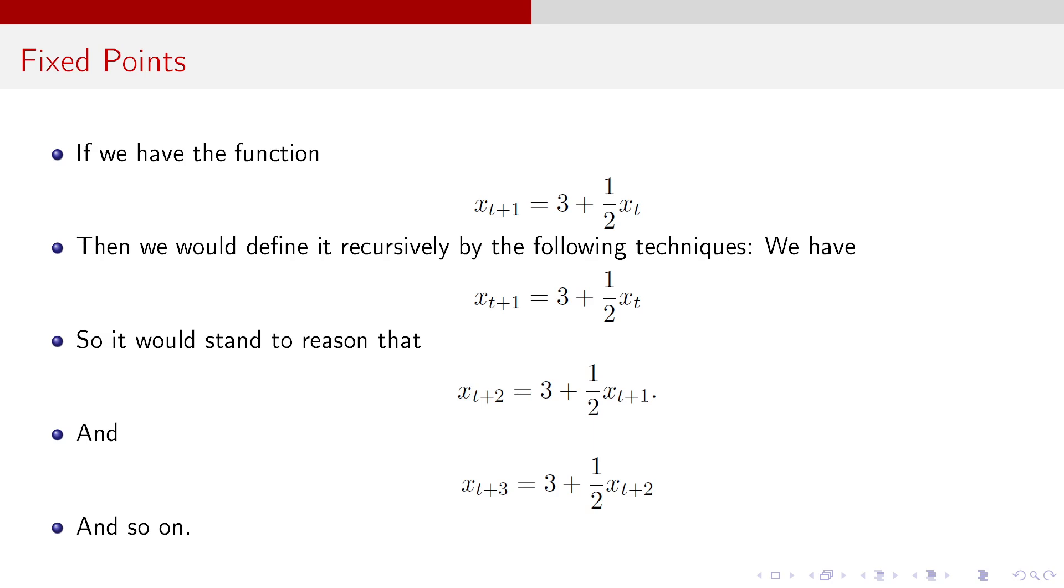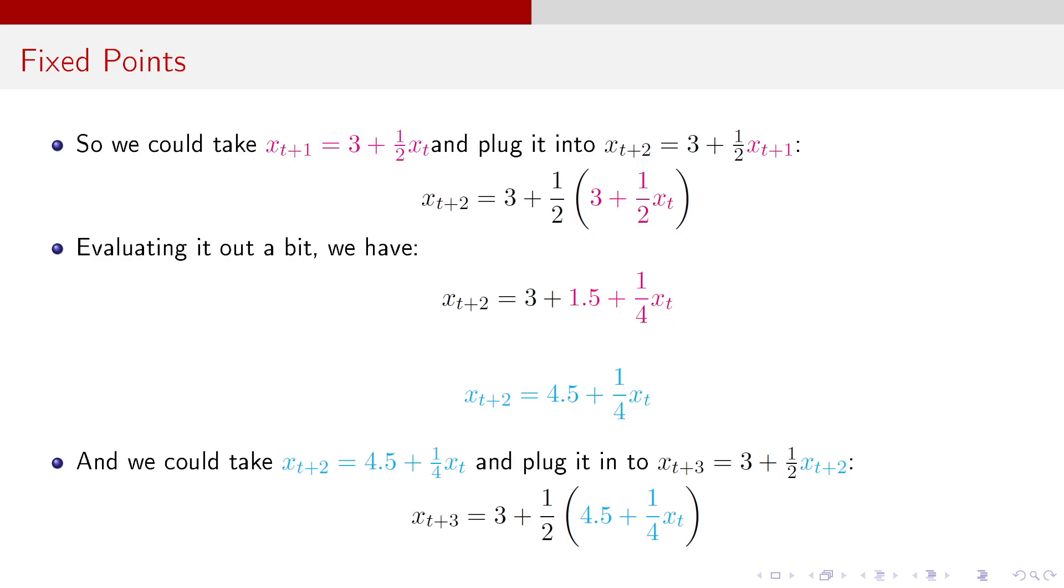So, if I have that function, X_{t+1} equals 3 plus 1/2 X_t, then we could define it recursively by the following techniques. If I have X_{t+1} equals 3 plus 1/2 X_t, it would stand to reason X_{t+2} is equal to 3 plus 1/2 X_{t+1}, and X_{t+3} is equal to 3 plus 1/2 X_{t+2}, and so on and so forth. All I'm doing is just updating the time subscripts by 1.